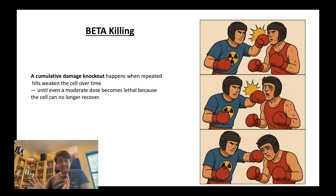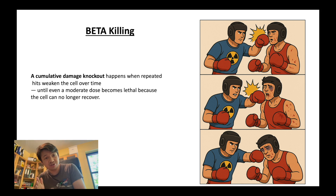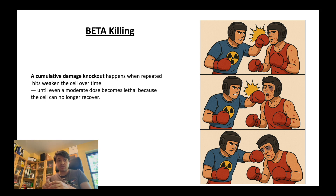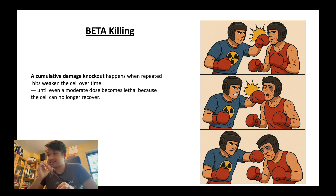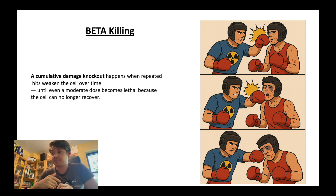But if all these damages had been given one on Monday, another on Tuesday, another on Thursday, this is not the same because the damages are spread out. The boxer had time to recover in between. This is exactly the same for the cell. This is the beta killing: the effect of accumulated sublethal hits delivered too close together for the cell to repair itself.